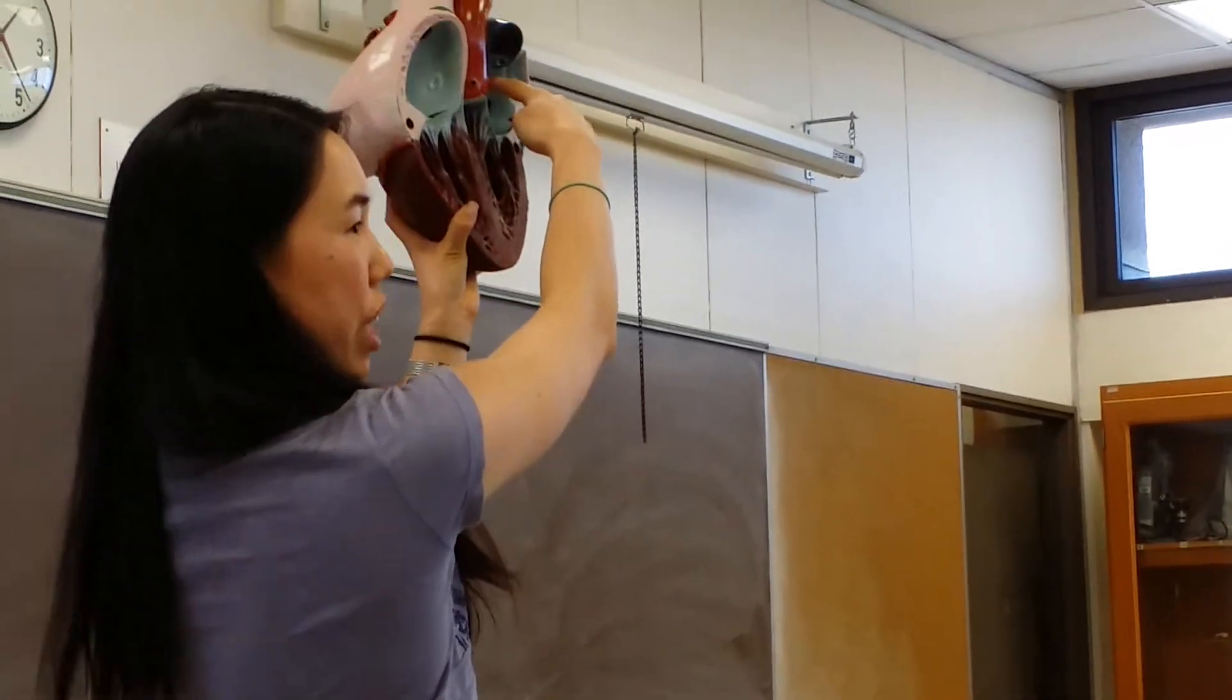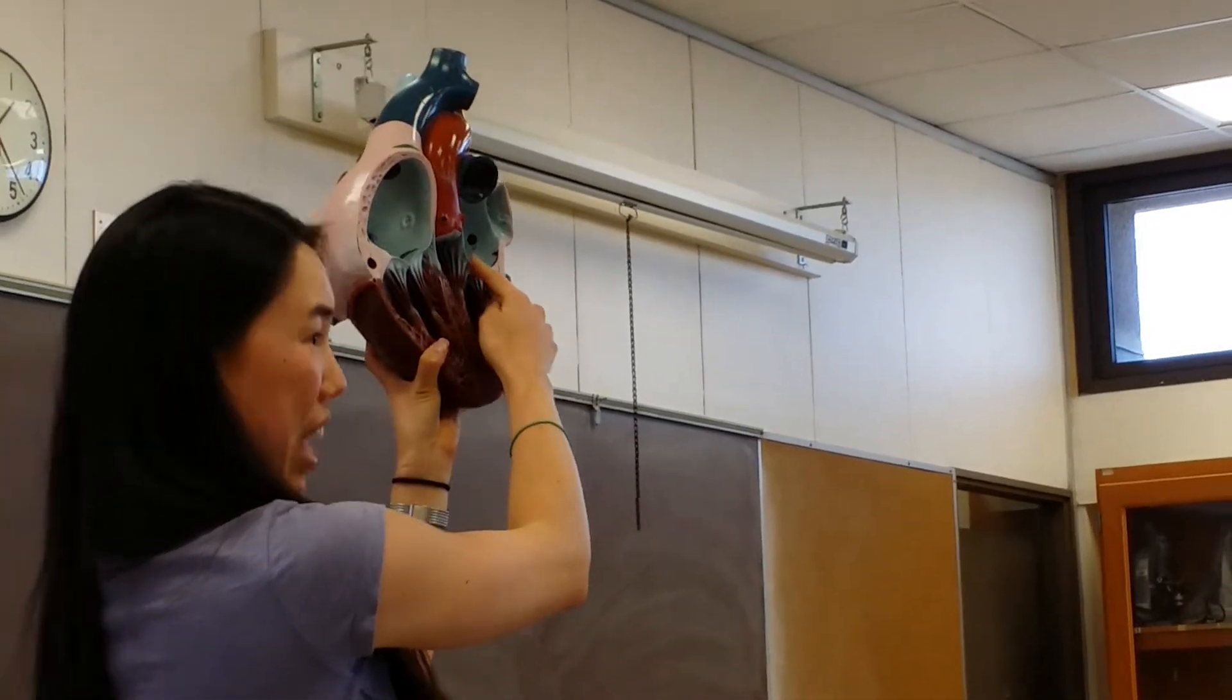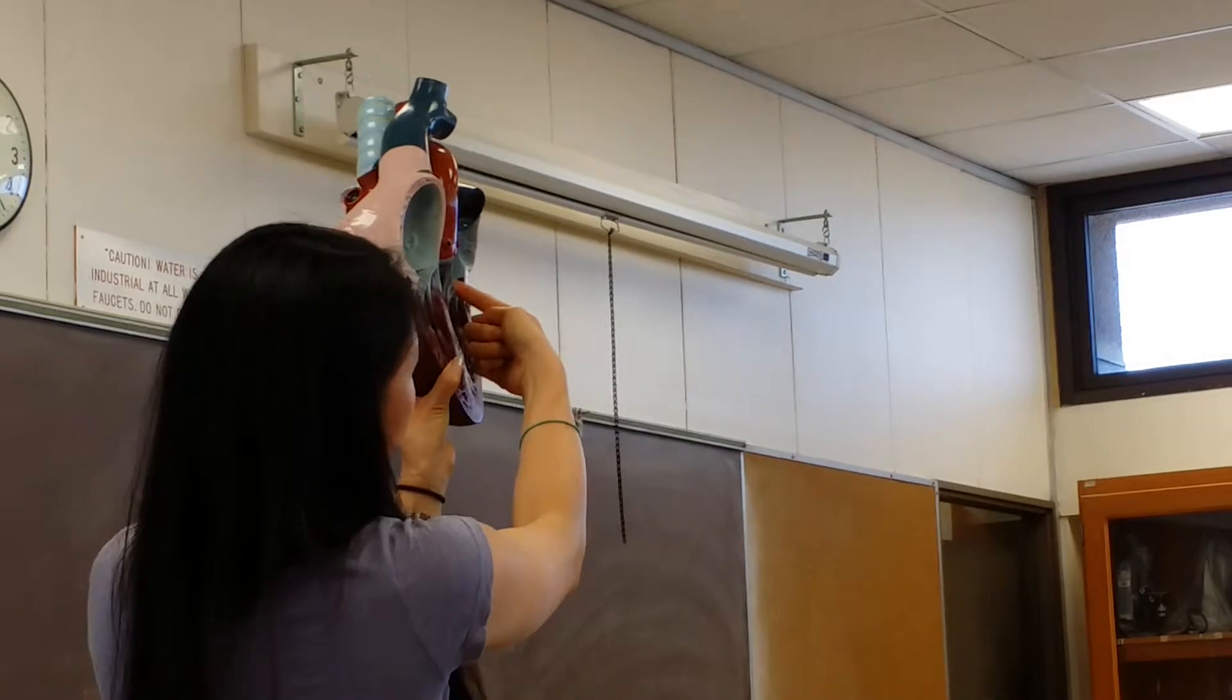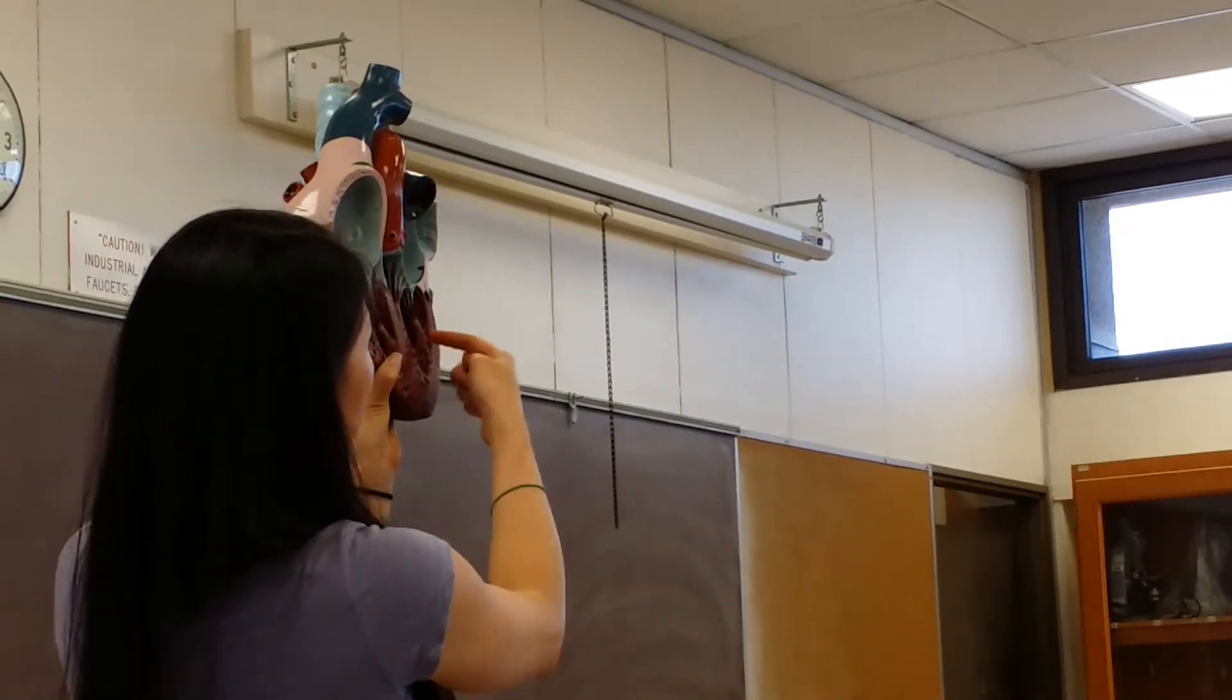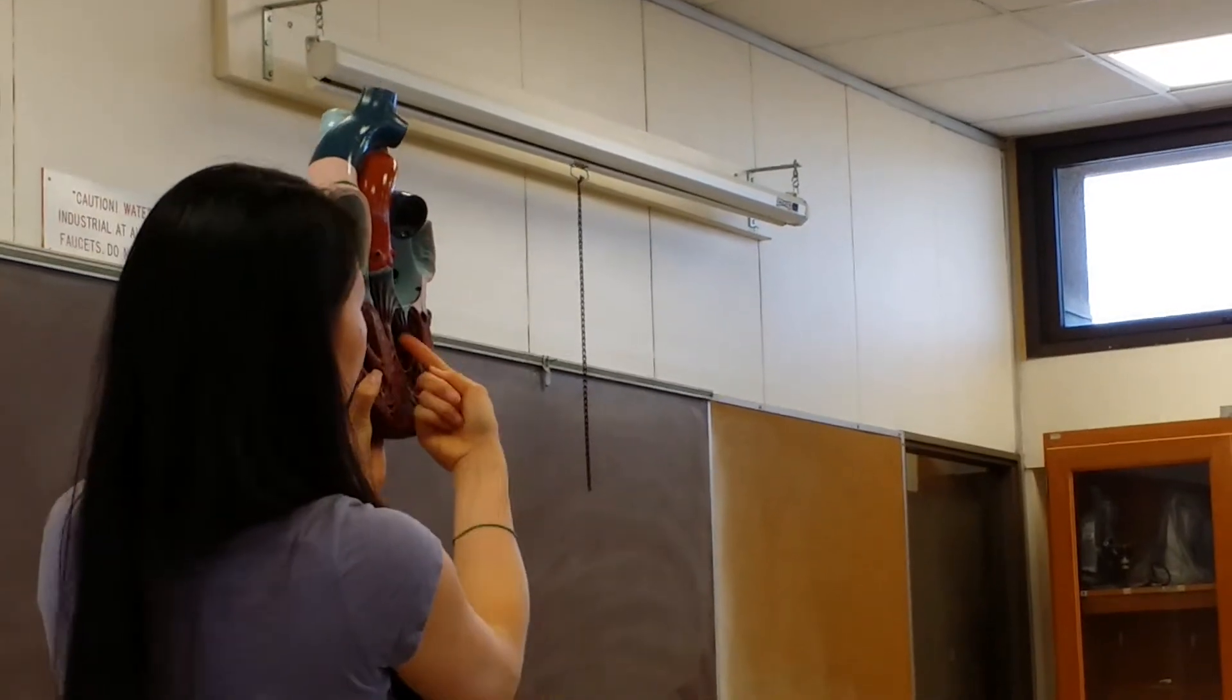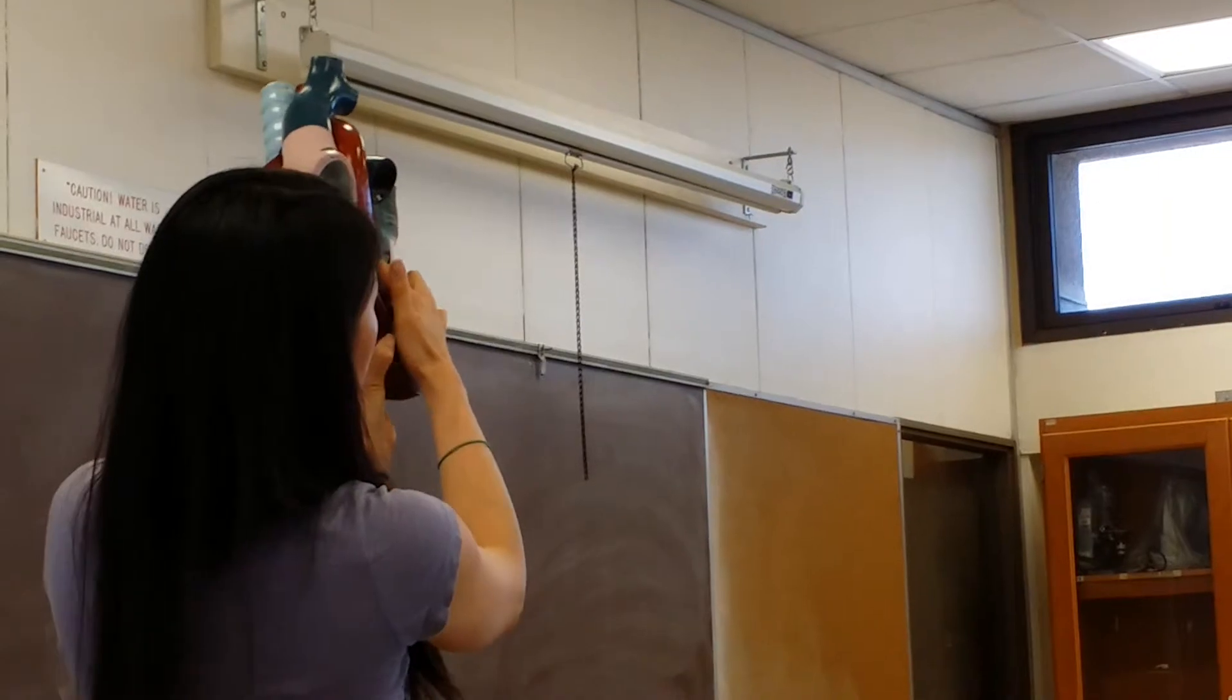From the left atrium, we go through the bicuspid or mitral valve, which is your left AV valve. From that valve, we drop down to your left ventricle. From the left ventricle, we exit through the aortic valve, which is a semilunar valve. And from there, you go out to the aorta,